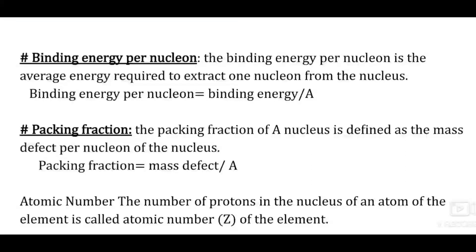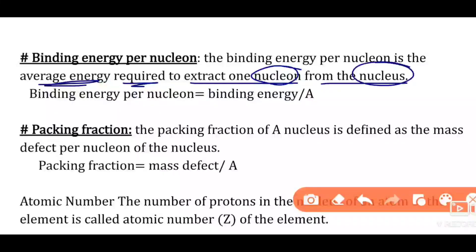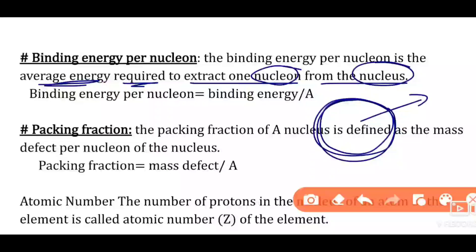Binding energy per nucleon is the average energy required to eject one nucleon from the nucleus. When we take a nucleus and remove one nucleon from it, the average energy required is called binding energy per nucleon. Binding energy per nucleon = binding energy divided by A.